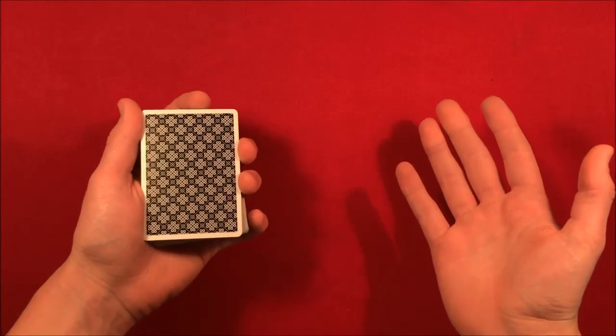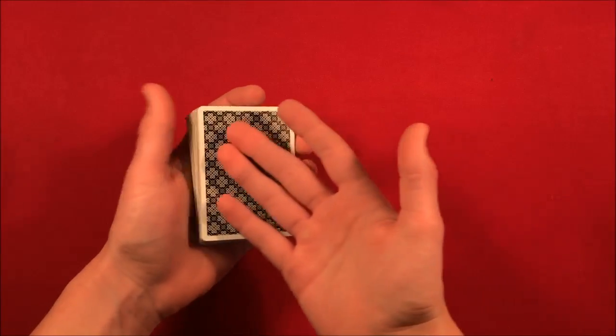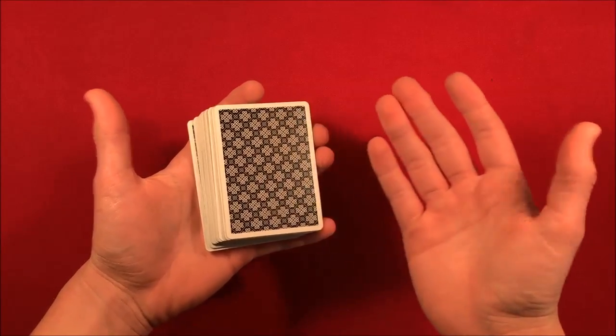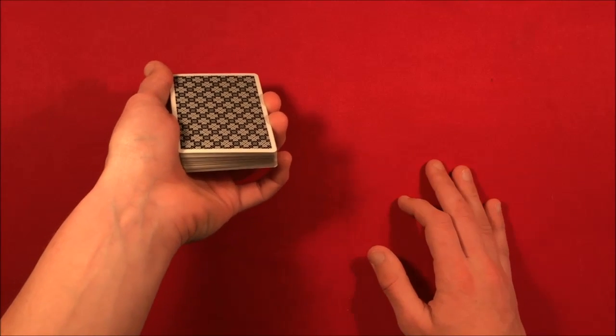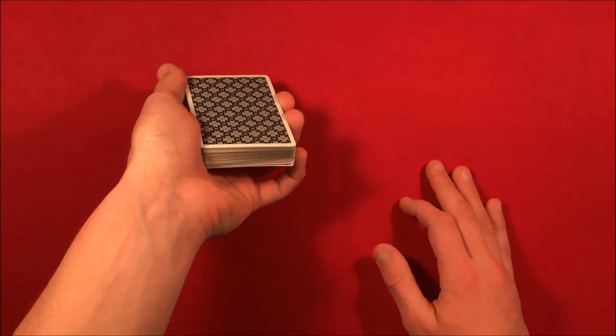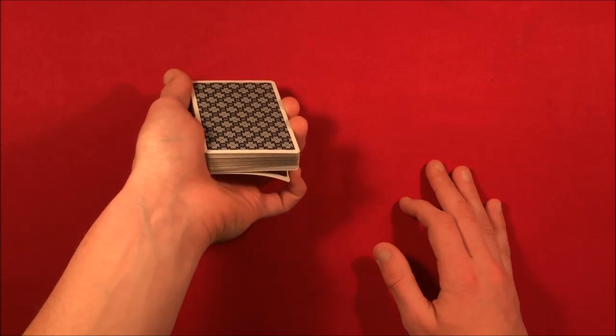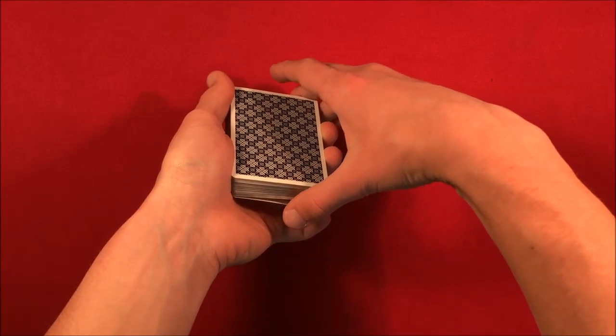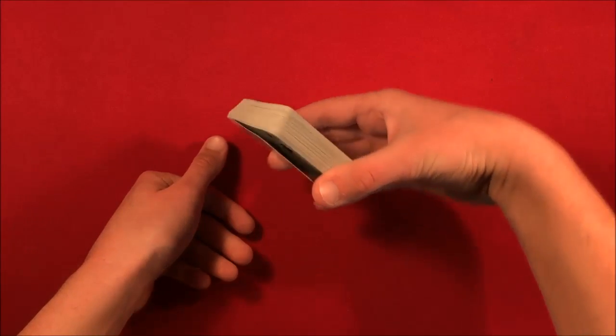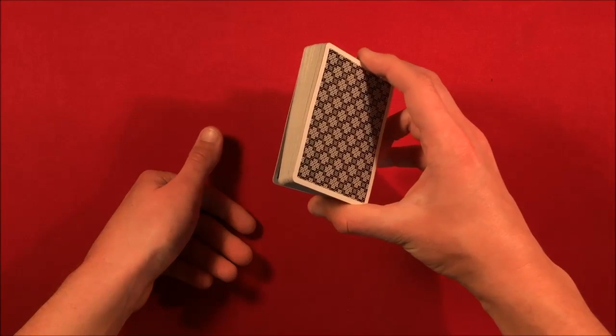At this point I picked up the deck and I told the spectators, to misdirect them, that I'm just going to try to keep control of this card even though I'm shuffling it up. While you're saying that, you're just going to pull down the bottom card just like this, getting a pinky break, moving this over to a thumb break. This is very simple.